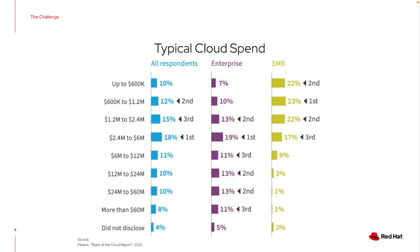So what does that typical spend look like? Whether I'm a large enterprise or on the smaller end of the business spectrum, I can see anywhere from $600,000 as the most common, all the way up to $2.4 million. If I even save 10% of that, that's anywhere from $60,000 to $240,000 a year — significant savings that I can redirect to other IT projects or hiring, rather than wasting that spend.